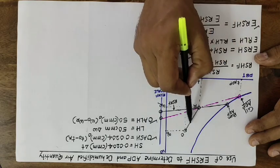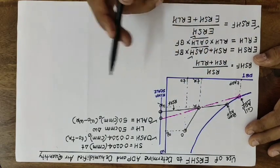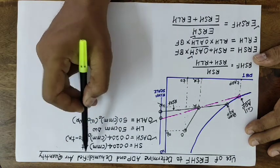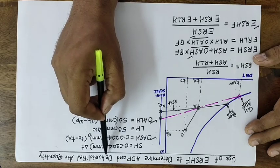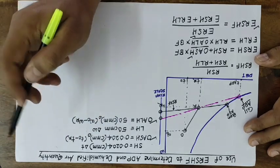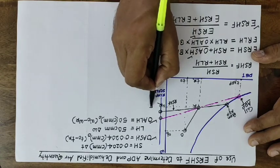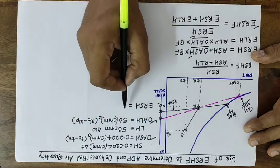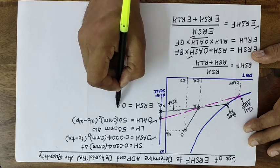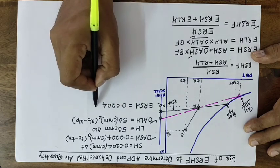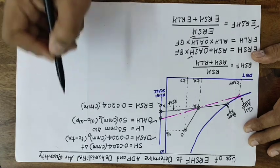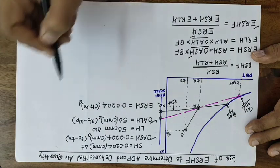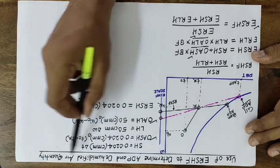Now to obtain the mixed air condition, you first calculate the total quantity of air supplied to the room — also called the dehumidified air quantity. For this, you can write the effective room sensible heat formula using the same basic formula: ERSHF = 0.0204 × CMM_D × ΔT, where the suffix D denotes dehumidified air quantity.